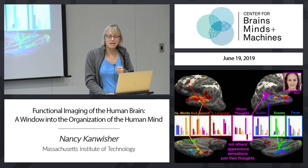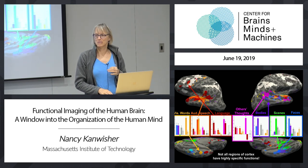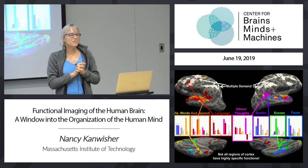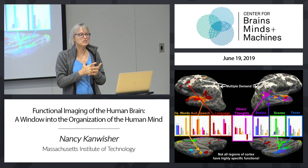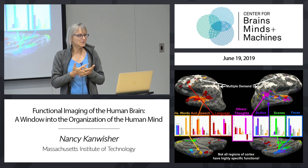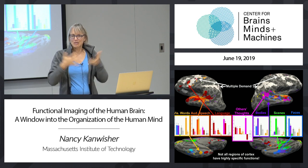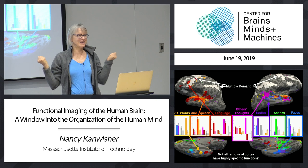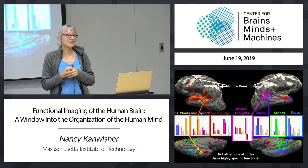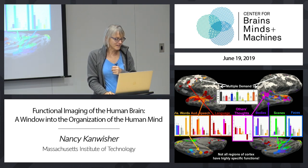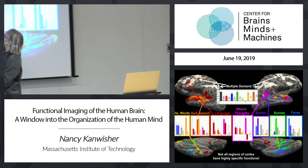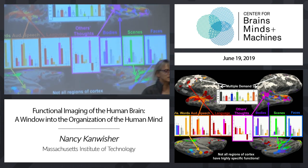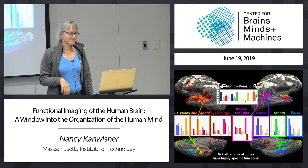Not every patch of cortex does something ridiculously specific. All that white stuff in those regions is kind of the opposite — those white regions are engaged pretty much whenever you do anything difficult, almost independent of what it is. They're completely indiscriminate; it's like your brain's CPU. Across a bunch of different tasks — difficult versions versus easy versions across very different domains — those regions are almost always more active in harder tasks than easier ones.